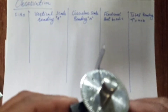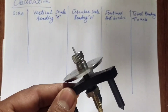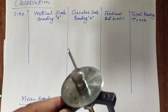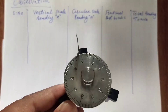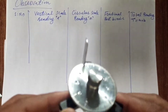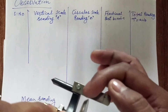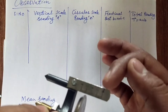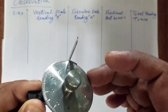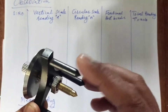Spherometer works on the principle of micrometer screw gauge, so it can measure up to one hundredth of a millimeter, which means 0.01 millimeter. It has two scales: circular scale and vertical scale, which is also known as the main scale. The main scale is fixed while the circular scale can rotate, and it has three legs.